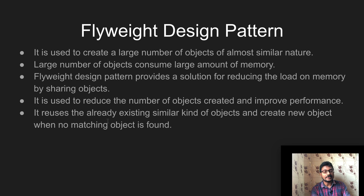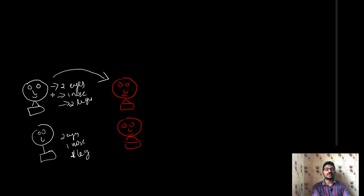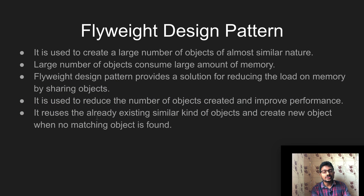It reuses already existing similar kinds of objects and creates a new object when no matching object is found. If a new Angry Birds with different dimensions is required at runtime — for example, two eyes, one nose, and one leg — and we don't have any object of this kind, the pattern says to create a new object if it doesn't exist in the cache. It checks whether the object is already present: if present, it reuses it; if not, it creates the new object and reuses it for the next successful request.